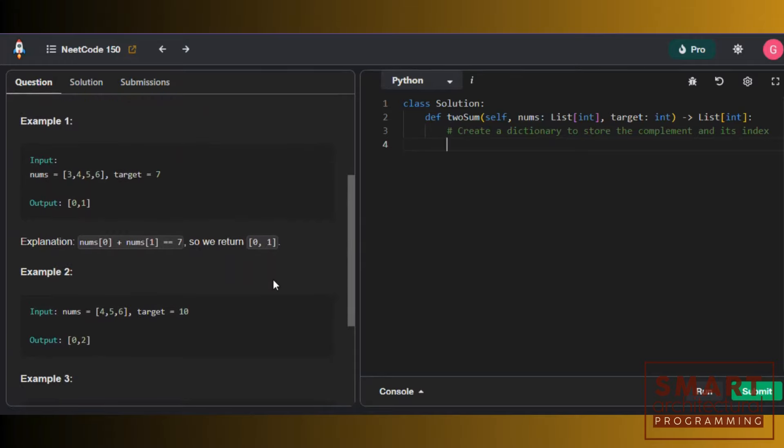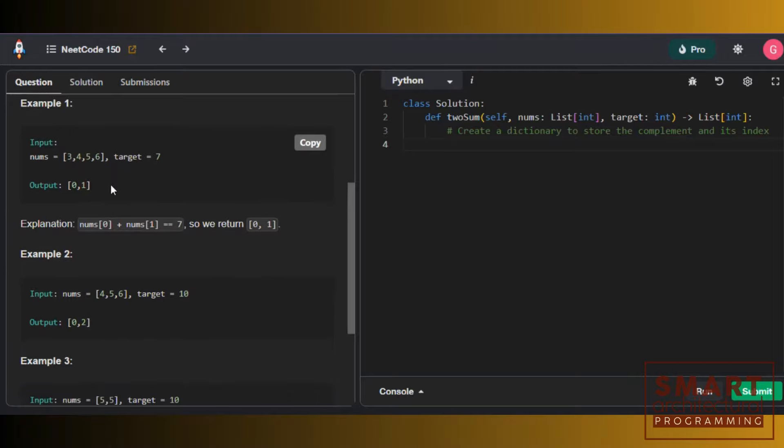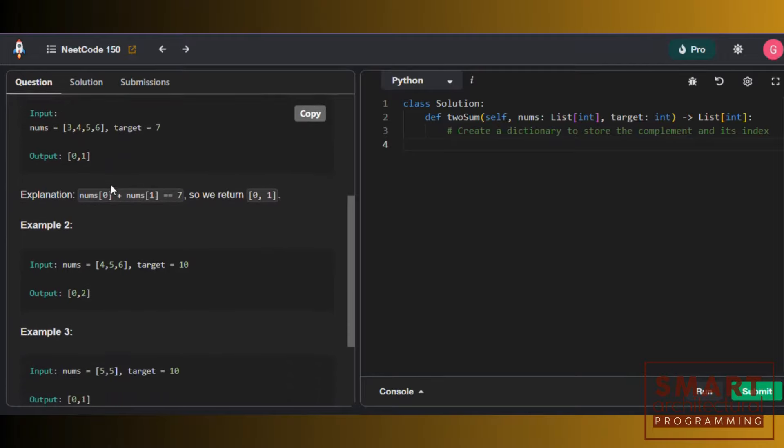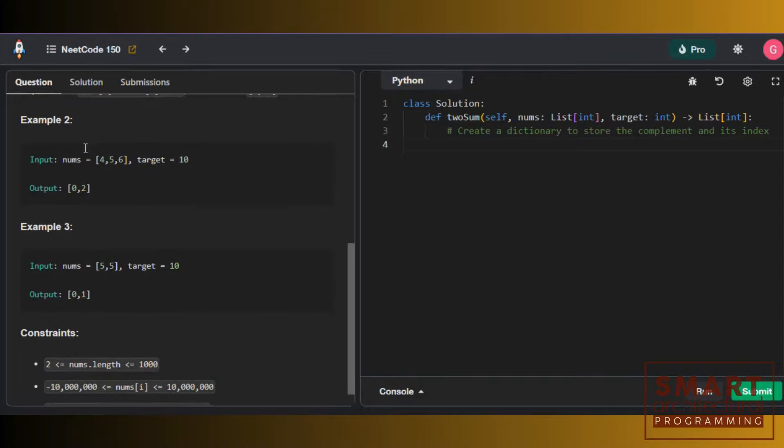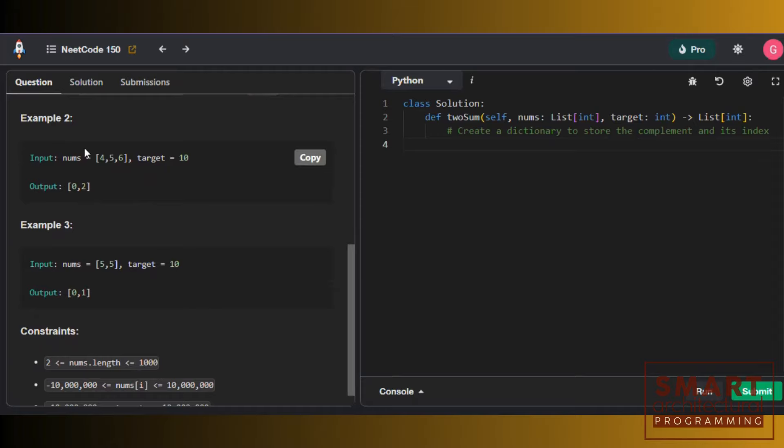As you can see, we have three examples that tell us exactly how this would work. We understand we have an array of numbers, and we can visually see which two numbers combine to get a target. We put an array which has the two indexes that return the target amount when summed together. All problems start from the input and output statements in the examples you're seeing right now.